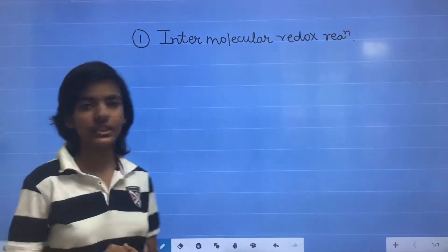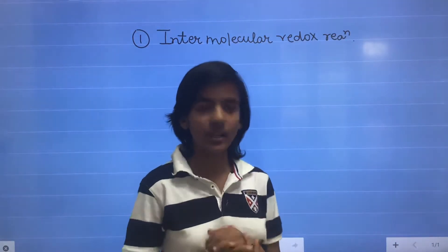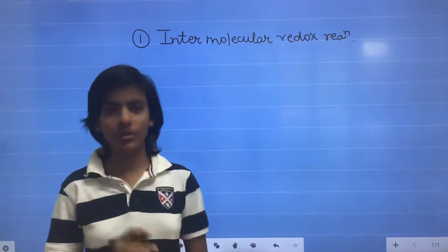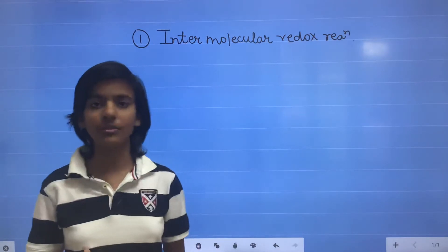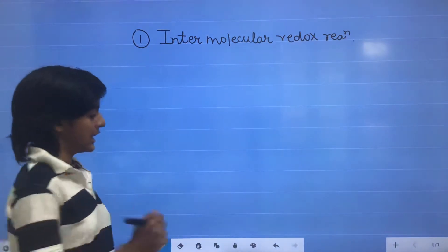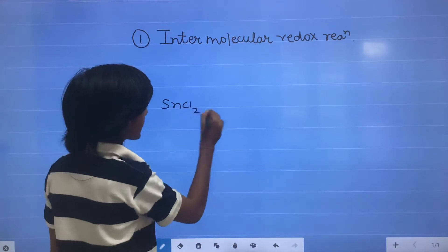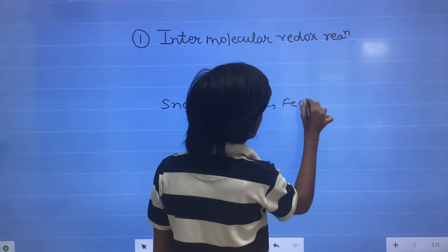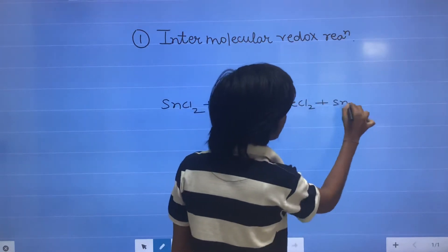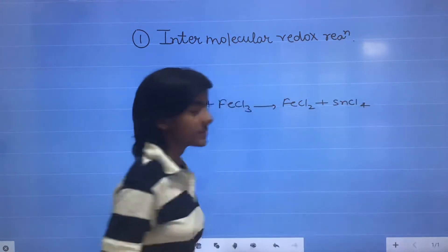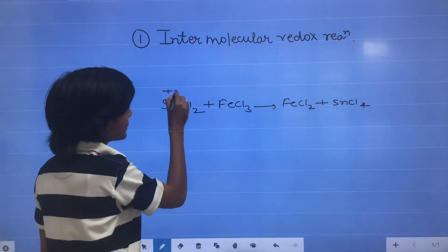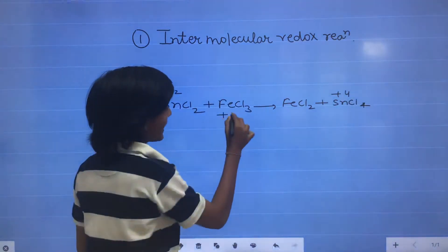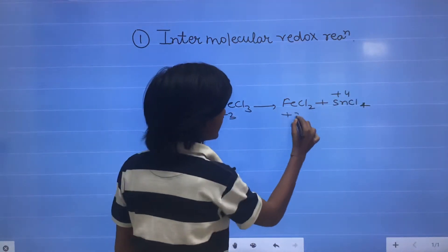Intermolecular redox reaction means the redox reaction which takes place between two molecules, and one molecule undergoes oxidation and the other molecule undergoes reduction. Like when SnCl2 and FeCl3 react, this gives FeCl2 plus SnCl4. So the oxidation state of Sn is plus 2 here and plus 4 there. And of Fe it is plus 3 here and plus 2 there.